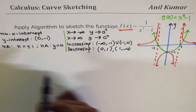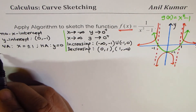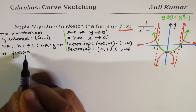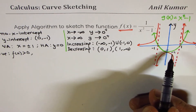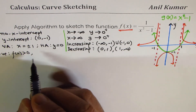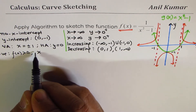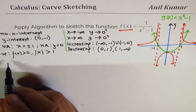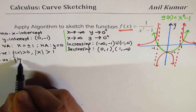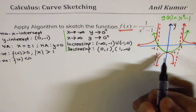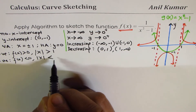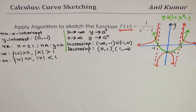The graph is positive — f(x) is greater than 0 — when the absolute value of x is greater than 1. And it is negative — f(x) is less than 0 — when the absolute value of x is less than 1. So these characteristics you can sketch in a rough sketch and get all of them.